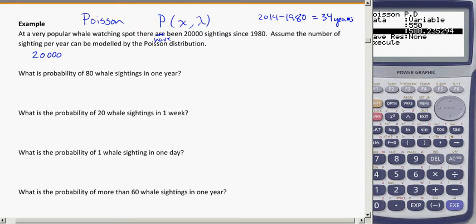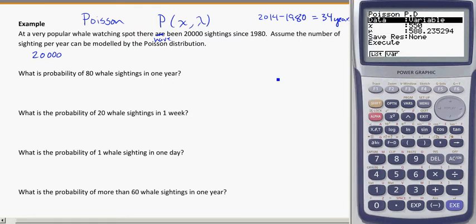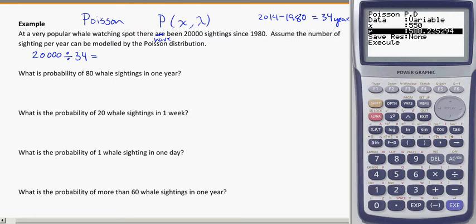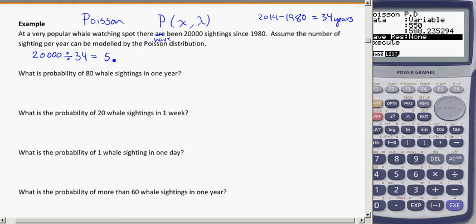So if we want to figure out, on average, the number of sightings, we're going to go 20,000 divided by the number of years, which in this case is 34. I'm just going to do that in my calculator. 20,000 divided by 34, and I get roughly 588.23.